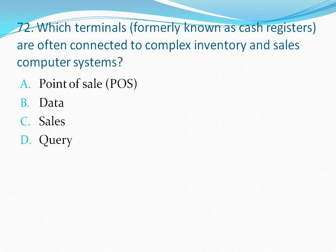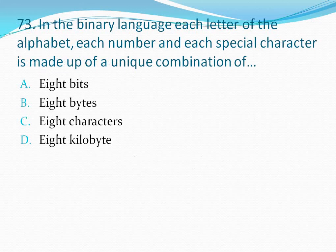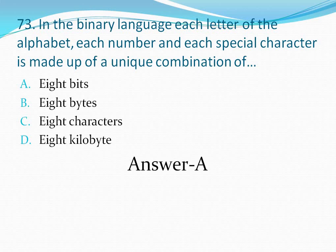Question number 73: In the binary language, each letter of the alphabet, each number, and each special character is made up of a unique combination of — option A 8 bits, option B 8 bytes, option C 8 characters, option D 8 kilobytes. The correct answer is option A — 8 bits.